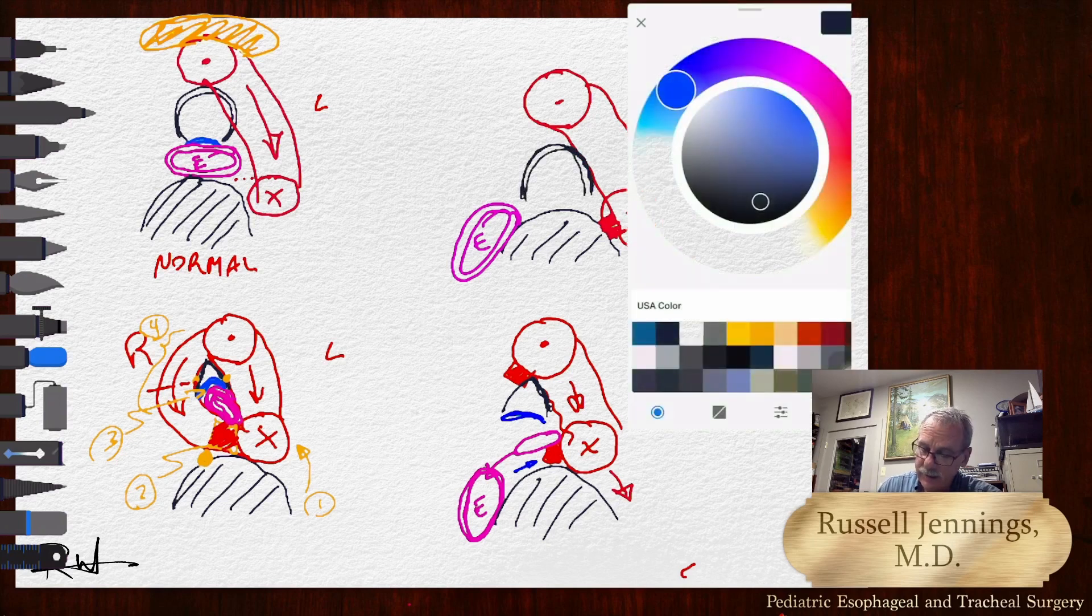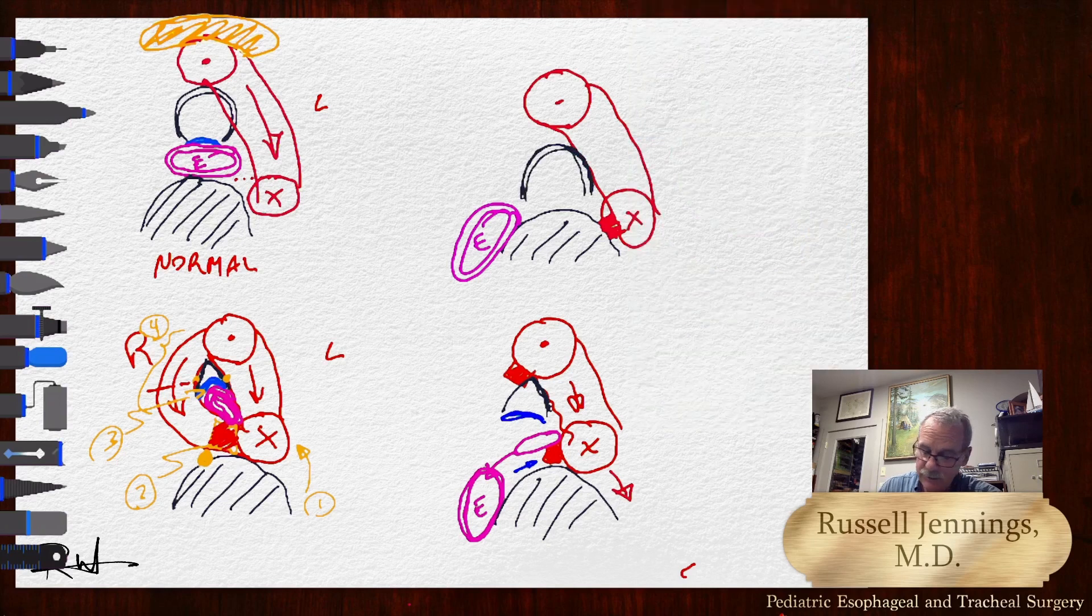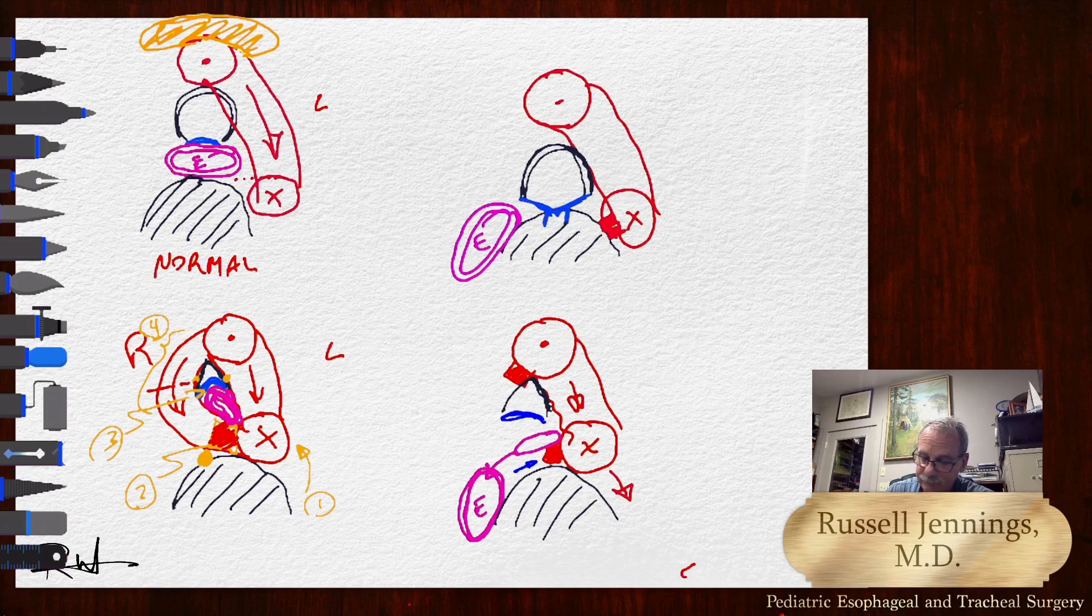And in order to keep the tracheomalacia at bay, to control the tracheomalacia, we suture that posterior membrane to the spine with little sutures right here. So what we've accomplished is not too dissimilar. You'll notice it's not too dissimilar from normal anatomy.